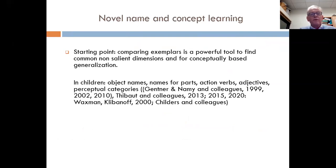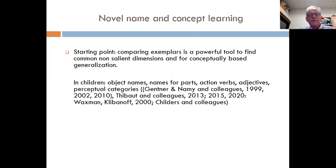My starting point is that comparing examples is a powerful tool to find common non-salient dimensions. It's a nice situation that promotes conceptually based generalization. It has been shown in many situations: for object names, names of parts, action verbs, adjectives, perceptual categories, and so forth. For example, Gentner and Namy have done wonderful studies on this subject; Waksman and Klibanoff on adjectives; Jane Childers and colleagues on verbs.